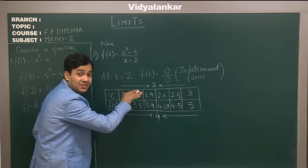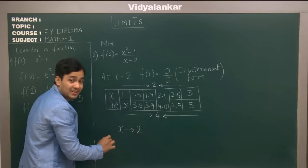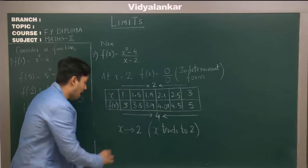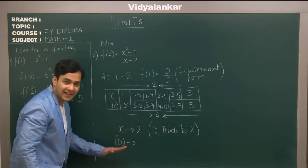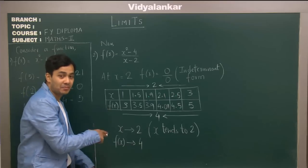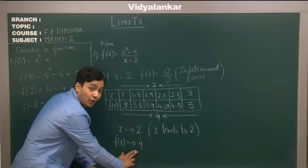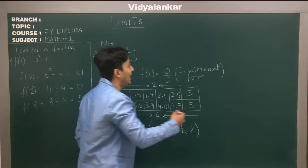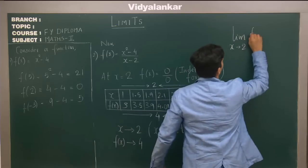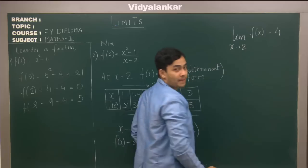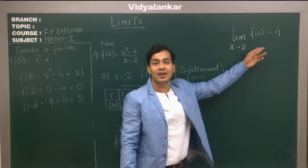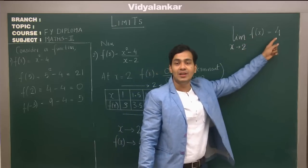We are not putting the value x = 2 directly, but we observe that when x tends to 2 — this symbol is read as 'x tends to 2' — f(x) approaches the value 4. This is written symbolically as: limit x tends to 2 of f(x) = 4. This means the limit value of f(x) as x tends to 2 equals 4.